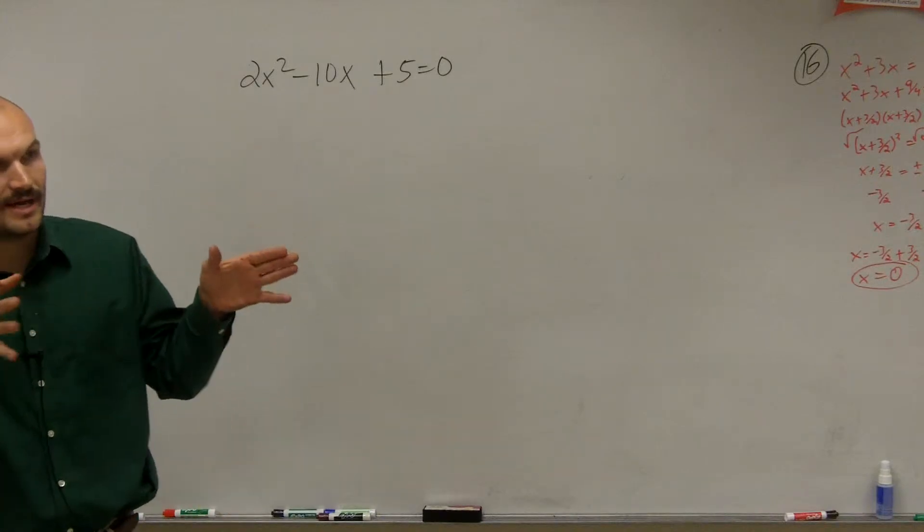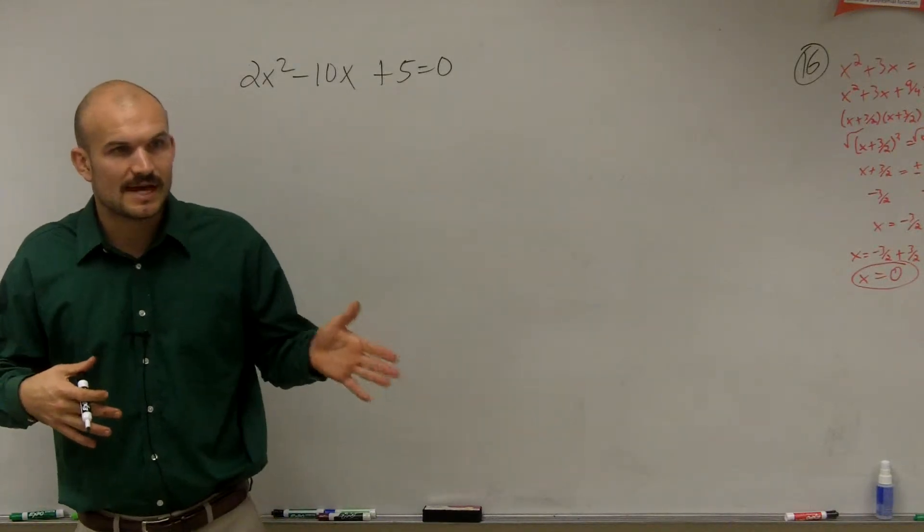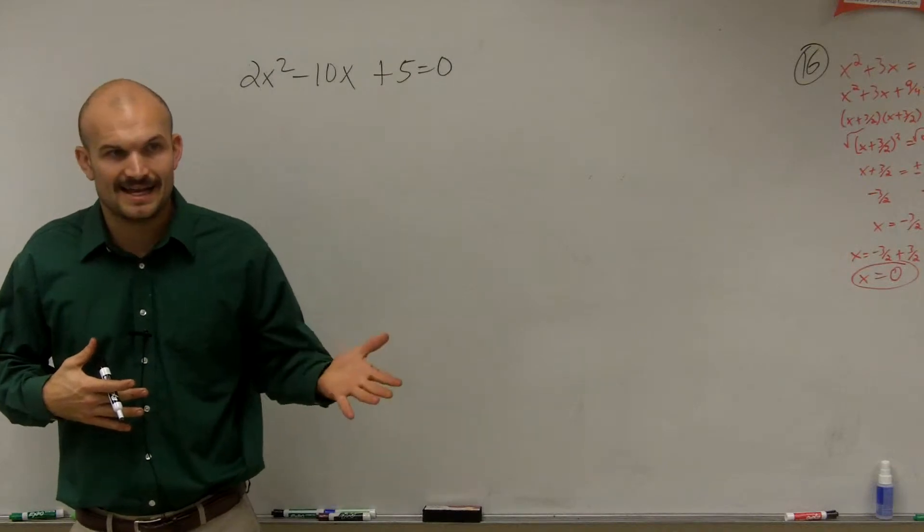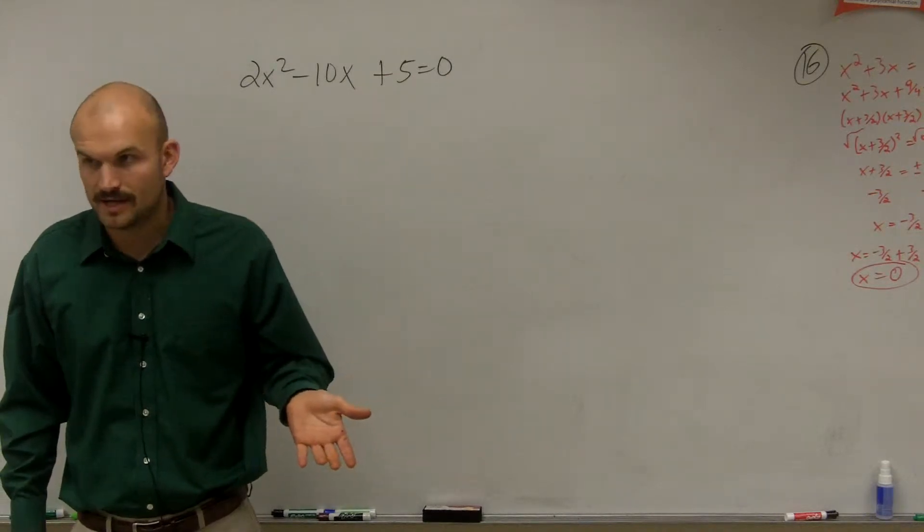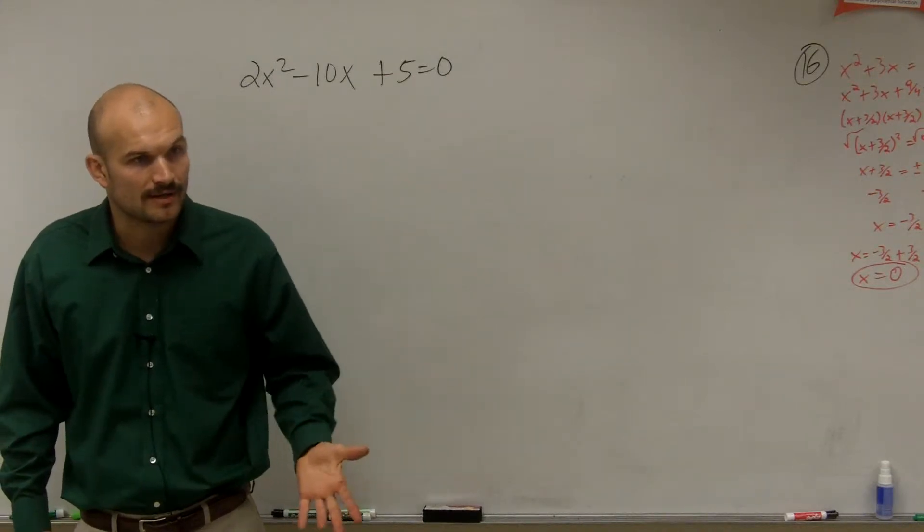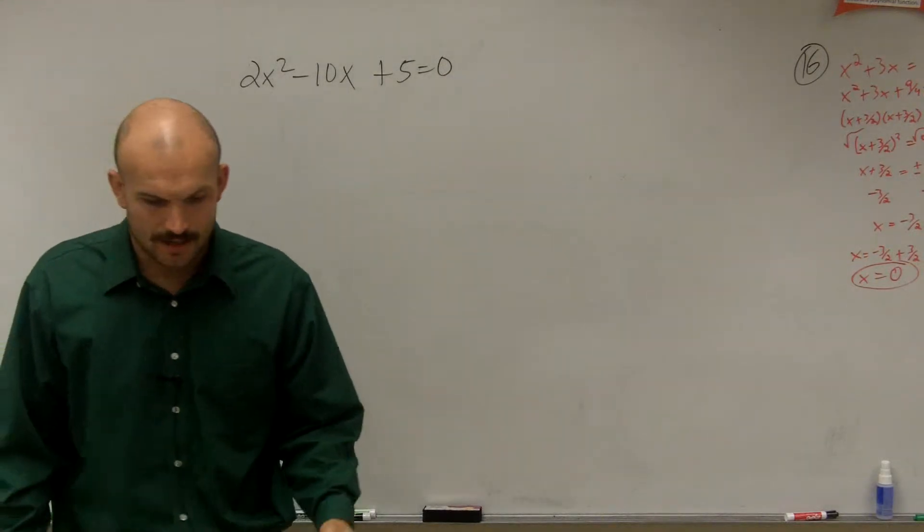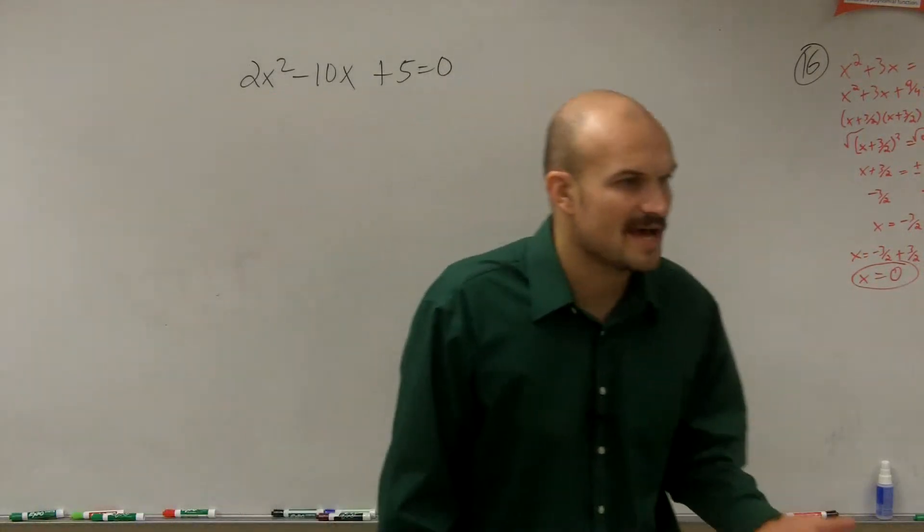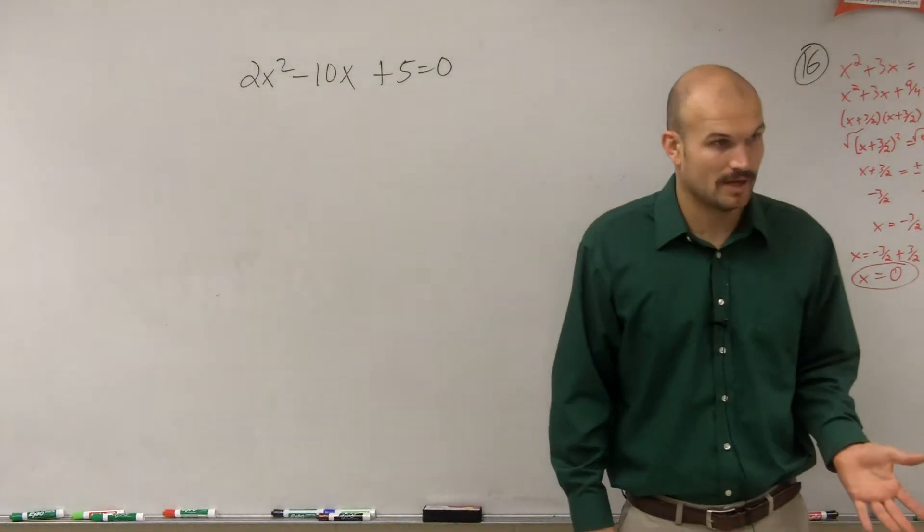So if you guys look at the problems that we previously completed, every single time we create a perfect square trinomial, our a was equal to 1. We always had a equal to 1. And that's one constraint that you guys have to have when completing the square. Your a has to equal 1.